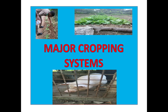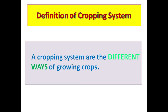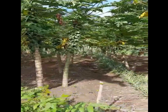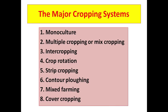The topic for today's lesson is major cropping systems. The aims are: number one, to define cropping systems; and number two, to list and explain the different cropping systems. We are going to look at eight of them: monoculture, multiple cropping or mixed cropping, intercropping, crop rotation, strip cropping, contour plowing, mixed farming, and cover cropping.